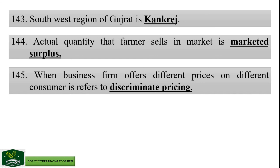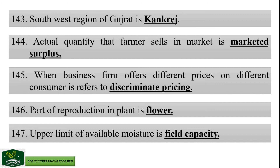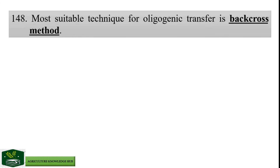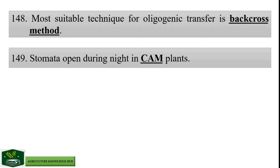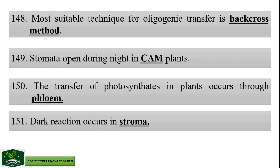Part of reproduction in plant is flower. Upper limit of available moisture is field capacity. Most suitable technique for embryo transfer is back-flush method. Stomata open during night in CAM plants. The transfer of photosynthates in plants occurs through phloem. Dark reaction occurs in stroma.